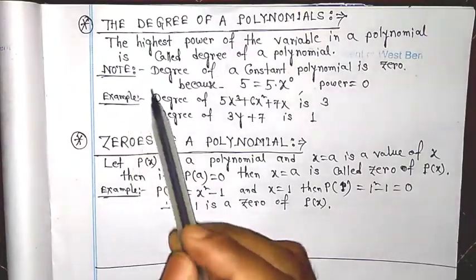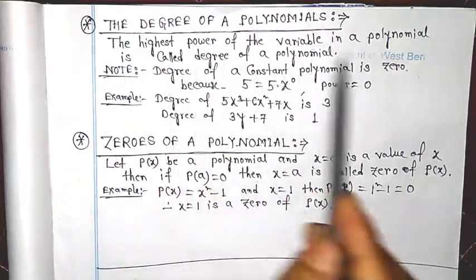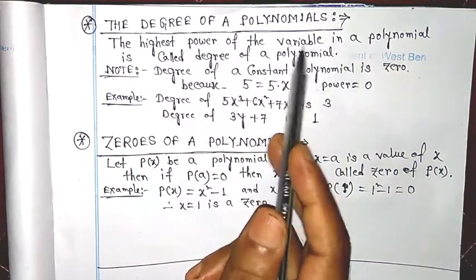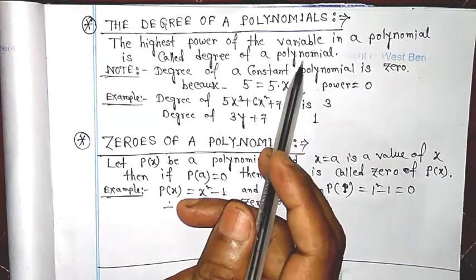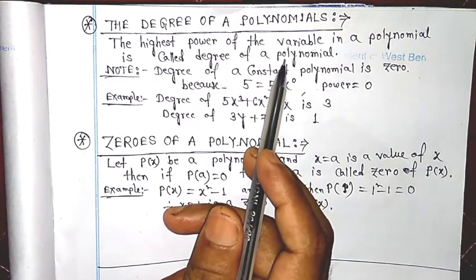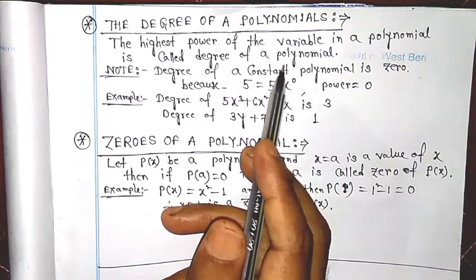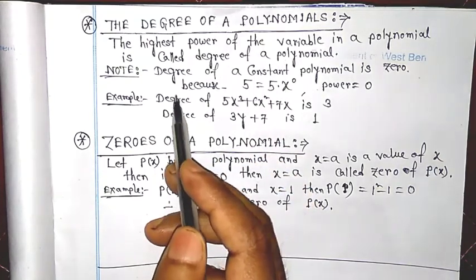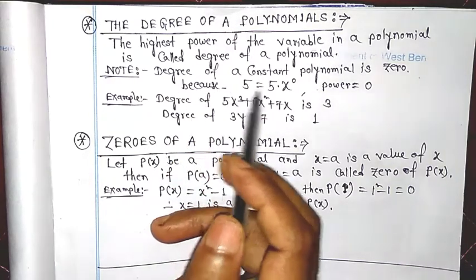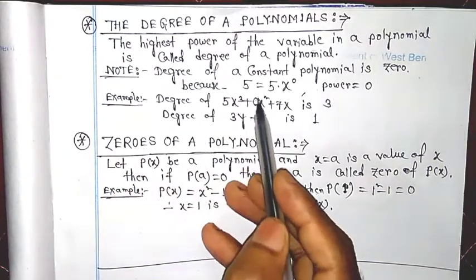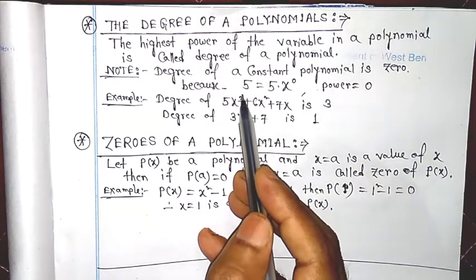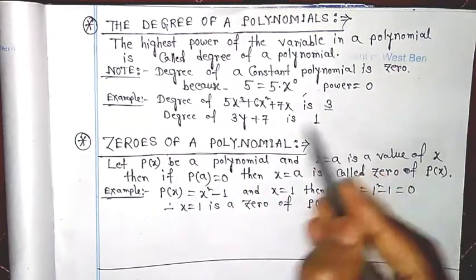Now I discuss the degree of a polynomial. The highest power of the variable in a polynomial is called the degree of that polynomial. For example, the degree of 5x³ + 6x² + 7x — the highest power is 3, so the degree of this polynomial is 3.